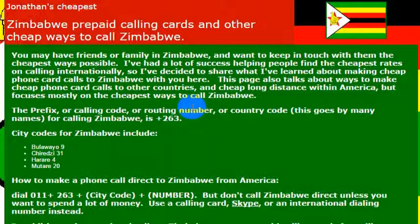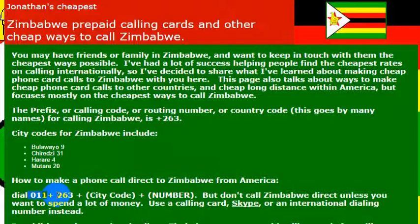When you get ready to go or you want to call friends or family there, it's very simple. If you're calling from the United States, you dial 011 — that's the international dialing code for getting to an international line. Then you dial 263, which is the country code for Zimbabwe, and then the phone number you want to reach.